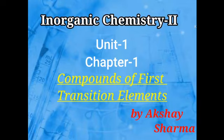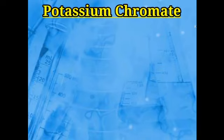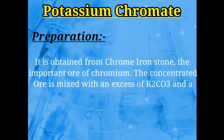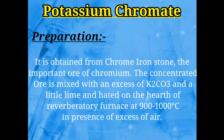First we discuss potassium chromate. Its formula is K₂CrO₄. It is prepared by two methods. Number one: from chrome iron stone. Potassium chromate is obtained from an ore called chrome iron stone, which is the ore of chromium.